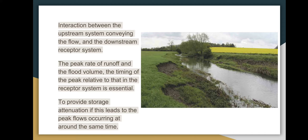Not because the rate of exceedance flow is small, but because the maximum value occurs offset from the peak in the receiving river. It may pass downstream without being detrimental. In such cases, it may actually be detrimental to provide storage if this leads to the peak flow occurring at around the same time as the downstream peak.